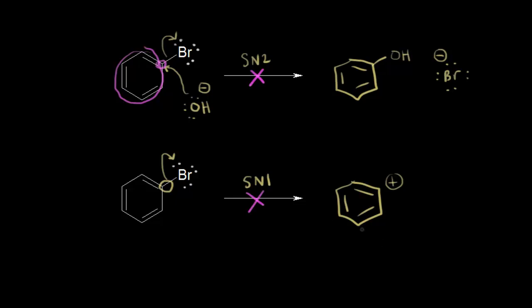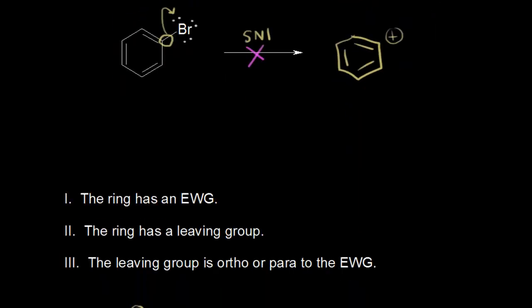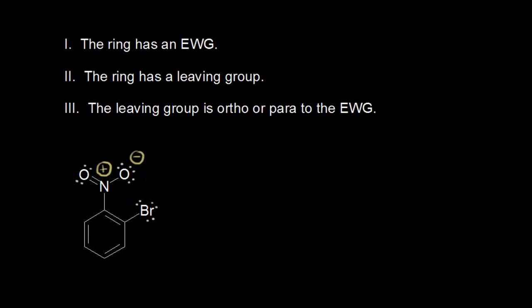SN1 is actually possible if you have an incredible leaving group, but for our purposes it's extremely unlikely. So SN2 is out and SN1 is out — you might think you can't do a nucleophilic aromatic substitution, but you can. The criteria: your ring must have an electron withdrawing group withdrawing electron density from the ring — here the nitro group is electron withdrawing. The ring must also have a leaving group, and the leaving group must be ortho or para to the electron withdrawing group.